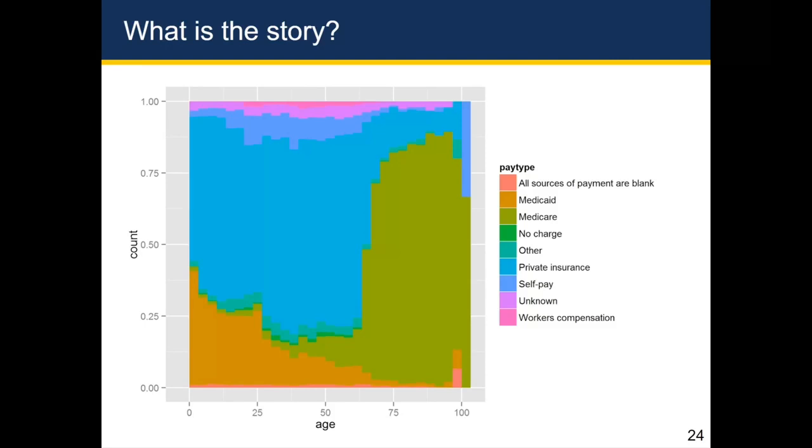On the flip side, Medicare is something that looks like people start getting somewhere in their kind of 20s or 30s, very small percentage, but then around age 65 the proportion of Medicare goes way up such that it even overtakes private insurance once you're at age 75 and above.